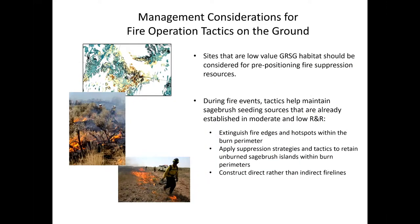The concepts of resilience and resistance are also helpful for determining the use of different fire operation tactics in different sagebrush communities. Sites that are low-value greater sage-grouse habitat should be high priorities for pre-positioning fire suppression resources. During fire events, certain tactics can help maintain sagebrush seeding sources in moderate and low resilience and resistance areas. These tactics include extinguishing fire edges and hot spots within the burn perimeter, applying suppression strategies to retain unburned sagebrush islands within burn perimeters, and constructing direct rather than indirect fire lines.